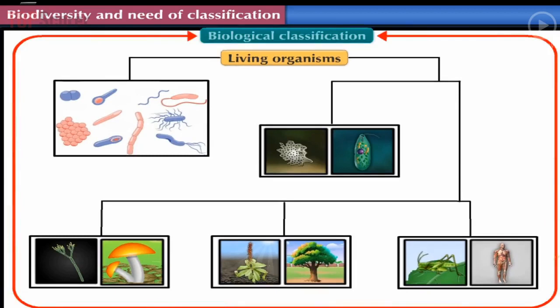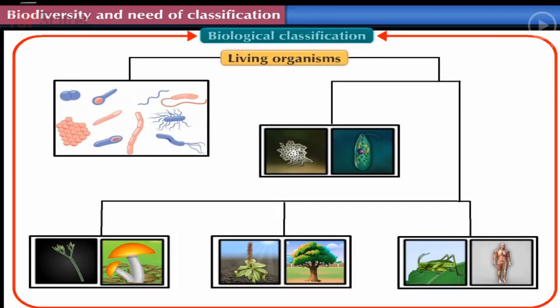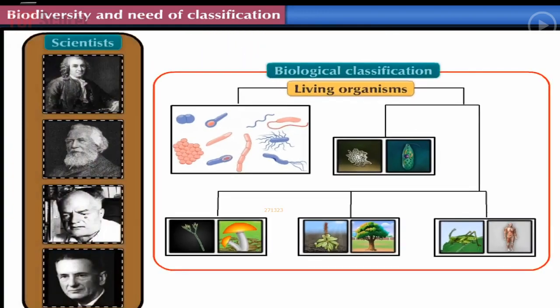Today's biological classification of living organisms is an outcome of the efforts of many scientists. Many scientists have contributed to the development of the present classification system. Before studying the present system of classification, let us peek into history and quickly revise the classification carried out by different scientists.